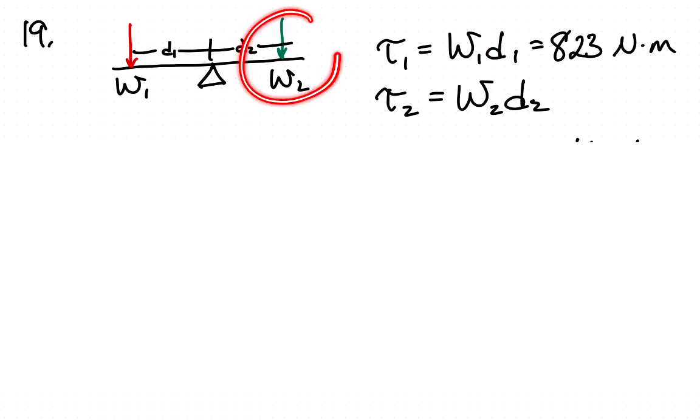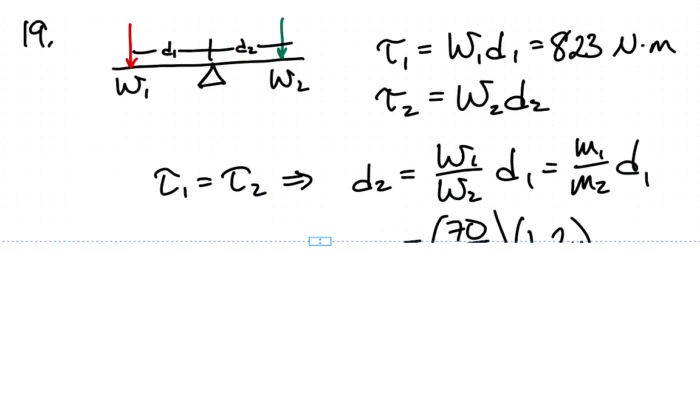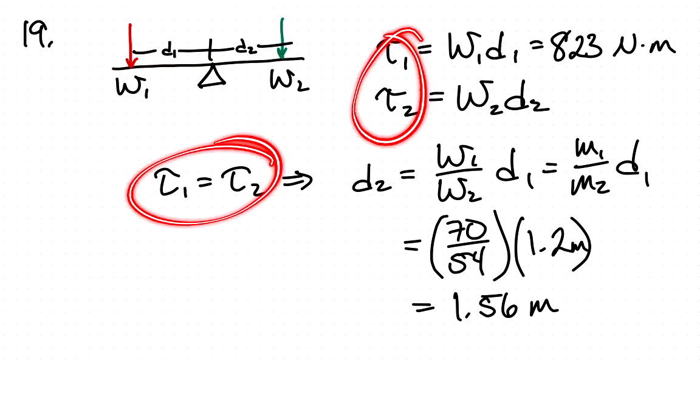Then we know the torque that Dawn creates is just her weight times the distance in the opposite direction. And so we know that to make this seesaw horizontal, these two torques have to be equal to one another.